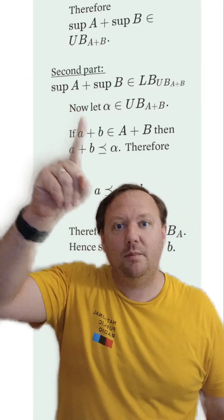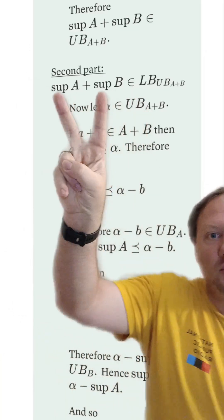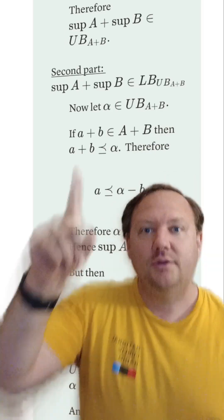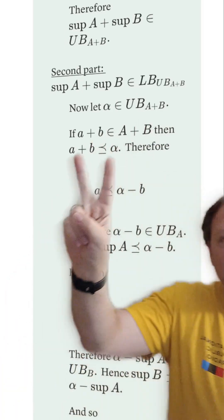And that makes the first part complete. Now we're going to move on to the second part where we show that sup A plus sup B is the least of the upper bounds. So let alpha be any upper bound of this set.